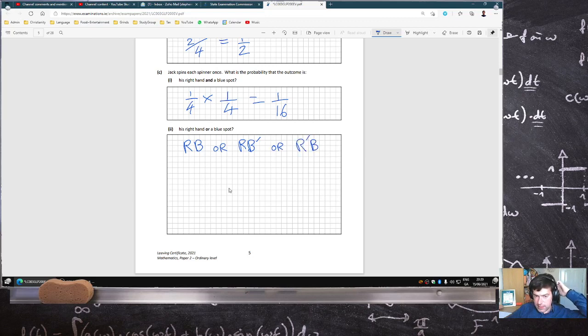So right hand and blue, or right hand not blue, or not right and blue. Am I missing anything? I don't think so. Right and blue, right and not blue, and then not right and blue. Yeah.